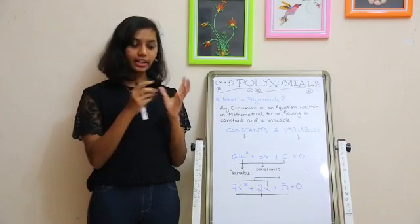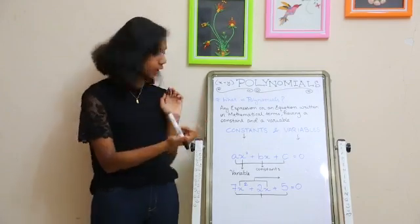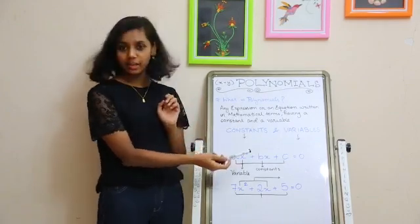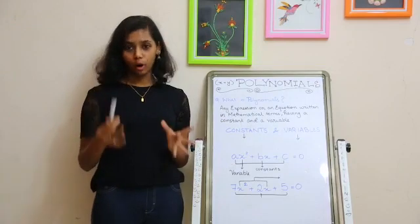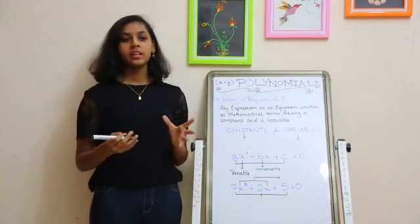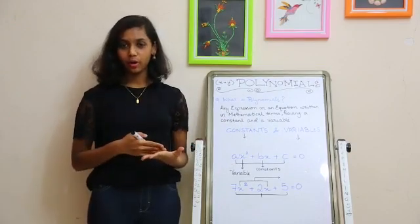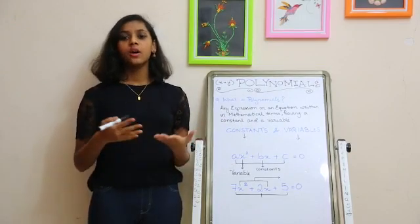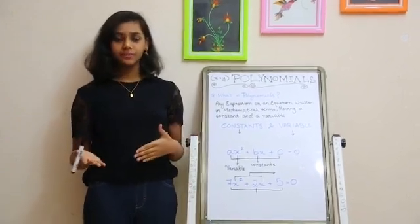When an equation or an expression consists of constants and variables, it is called a polynomial. Since we know the definition of polynomials, what are constants and variables?